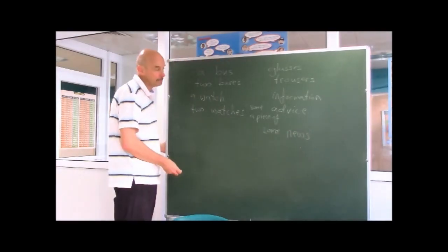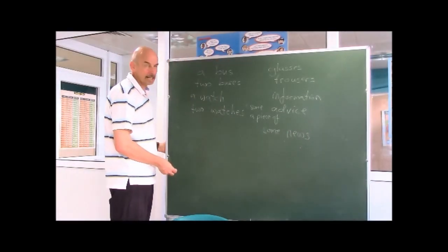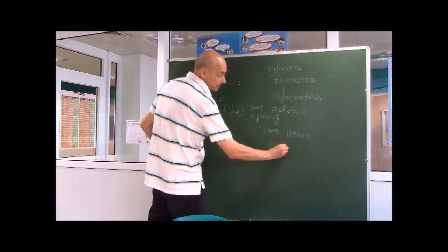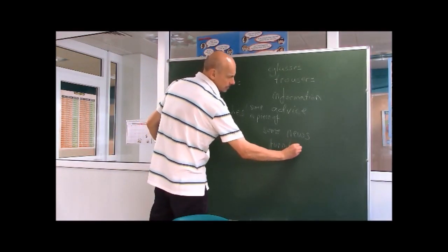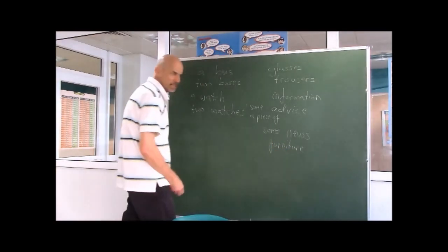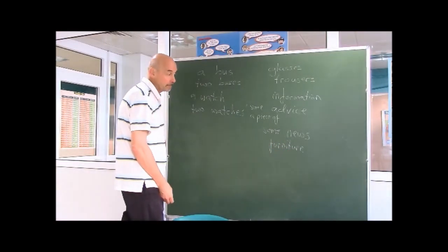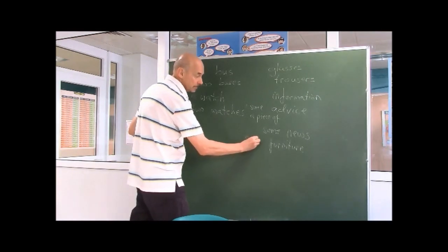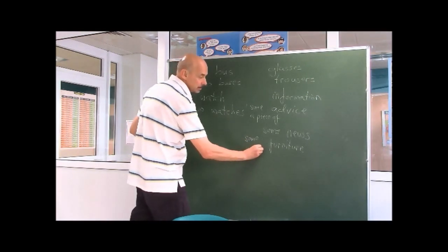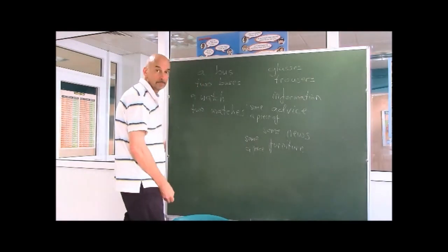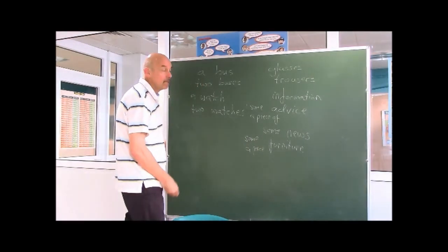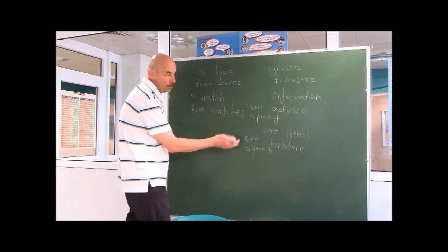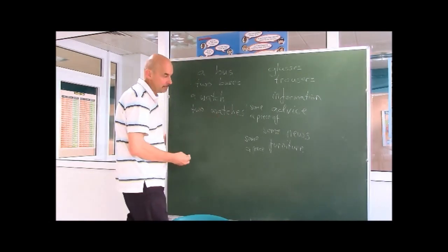You get other strange things like furniture, which, curiously, is never plural. Again, we talk about some furniture or a piece of furniture. Again, you can talk about other forms of dividing the object.